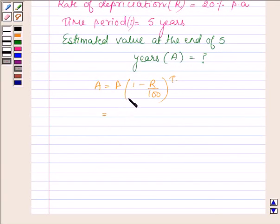P, which is the cost price of the machine, is 15,625 into 1 minus rate is 20%, and T is 5 years.